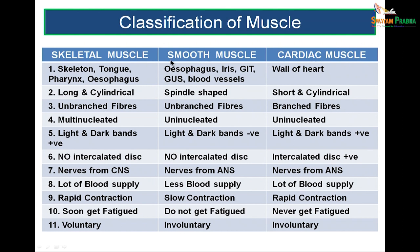Comparing the three types of muscle — skeletal, smooth, and cardiac — skeletal muscle lies in the body skeleton as well as in places like the tongue, pharynx, and esophagus. Smooth muscle lies in the esophagus, the iris, gastrointestinal tracts, genitourinary tracts, and blood vessels. Cardiac muscle lies only in the heart walls.